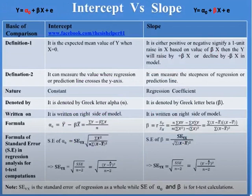Definition 1 of intercept is that it is the expected mean value of Y when X is 0. Whereas definition 1 of slope is that it is either positive or negative, signifying a one unit rise in X. Based on the value of beta X, then Y will rise by plus beta X or decline by minus beta X in the model.